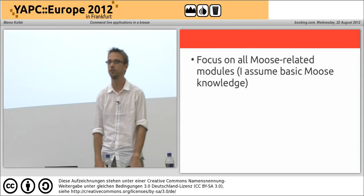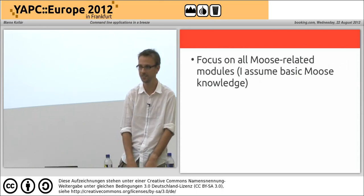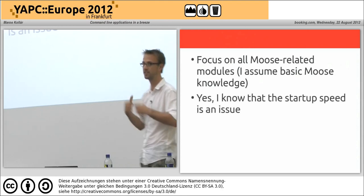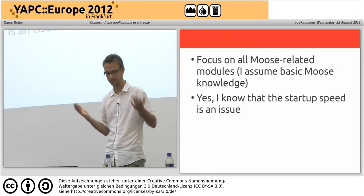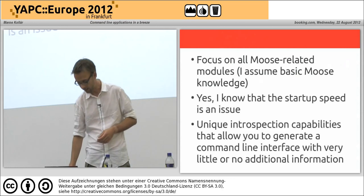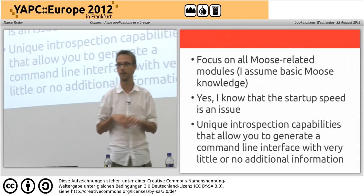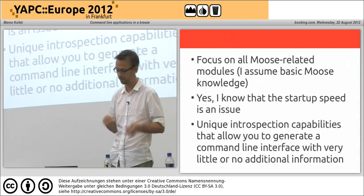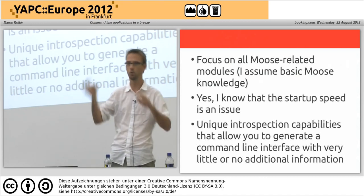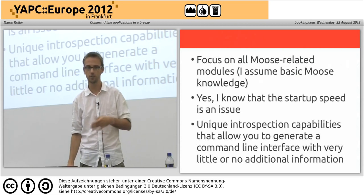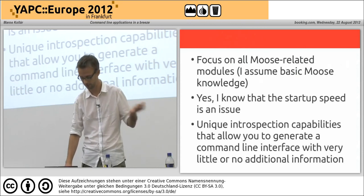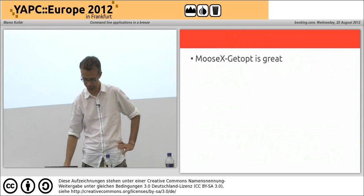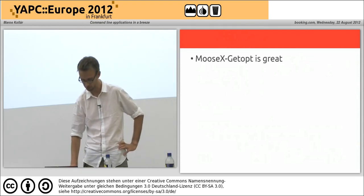I've assumed basic Moose knowledge in the audience. I heard a lot of criticism regarding command line applications and Moose because of startup speed — yes, it is an issue. Moose adds half a second of startup time to your application. But on the other hand, Moose offers unique introspection capabilities that allow me to generate a command line interface with very little additional information. I can reuse all the attributes defined in your class and introspect them, get the documentation, whether they're required or not, and so on. So let's introduce MooseX::Getopt.